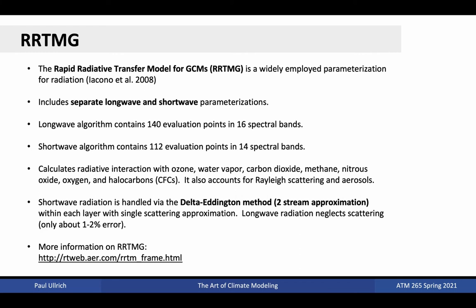The most widely employed radiative transfer parametrization for GCMs, and in particular CAM, is RRTMG, which stands for the Rapid Radiative Transfer Model for GCMs. In the long-wave regime, it includes 140 evaluation points over 16 spectral bands. In the short-wave regime, it includes 112 evaluation points over 14 spectral bands. It calculates radiative interactions with ozone, water vapor, carbon dioxide, methane, nitrous oxide, oxygen, and halocarbons. It also accounts for Rayleigh scattering and radiation-aerosol interactions. Short-wave radiation is handled via the delta-Eddington method two-stream approximation within each layer with a single scattering approximation. Long-wave radiation completely neglects scattering, which only introduces around a 1-2% error in the long-wave radiation calculation.